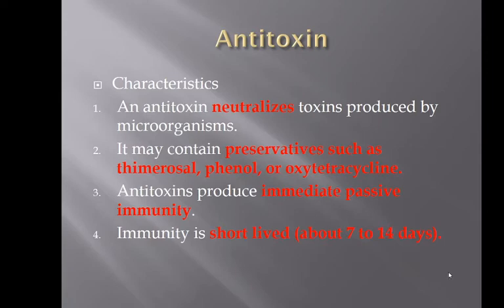The antitoxin neutralizes toxins produced by microorganisms and contains preservatives such as thimerosal, phenyl, and oxytetracycline. Antitoxins produce an immediate passive immunity, but it is passive — the immune system is not involved at all. It's just circulating through the bloodstream and is short-lived, lasting only about 7 to 14 days. If we give an antitoxin and a toxoid at the same time and they come into contact with each other, the antitoxin will destroy the toxoid, so it's not helpful to give those two simultaneously.